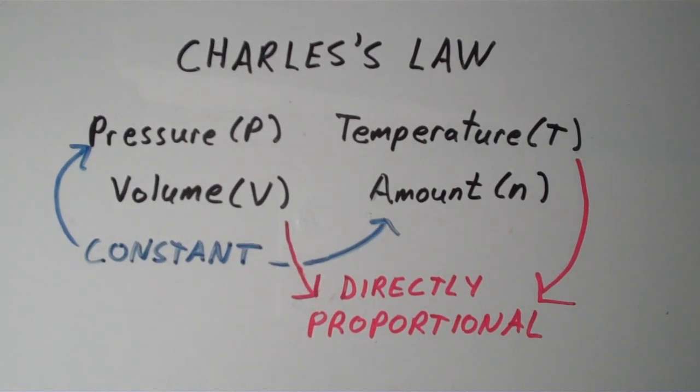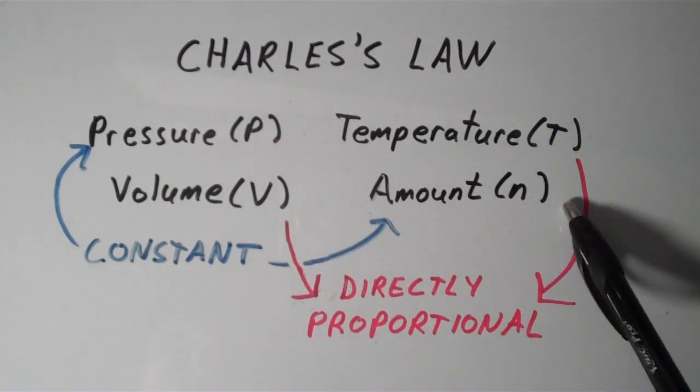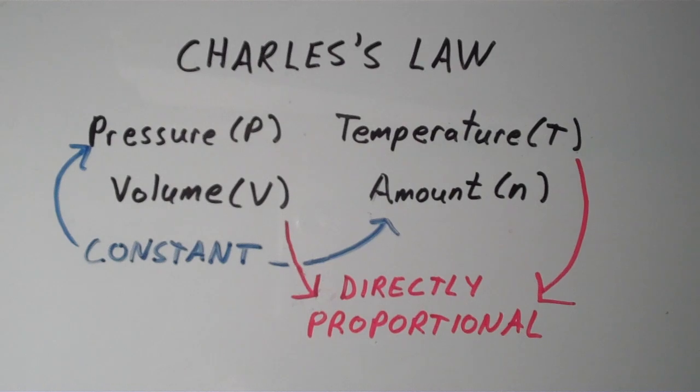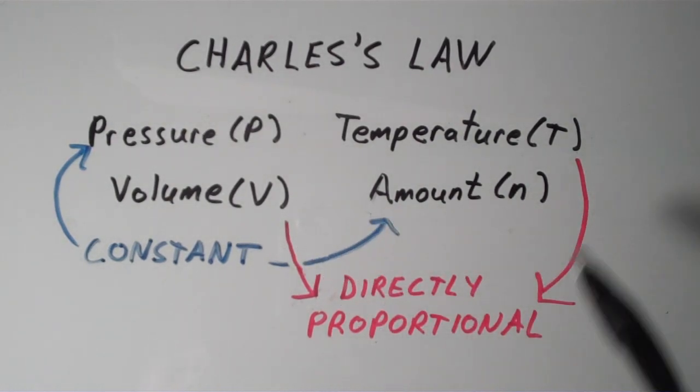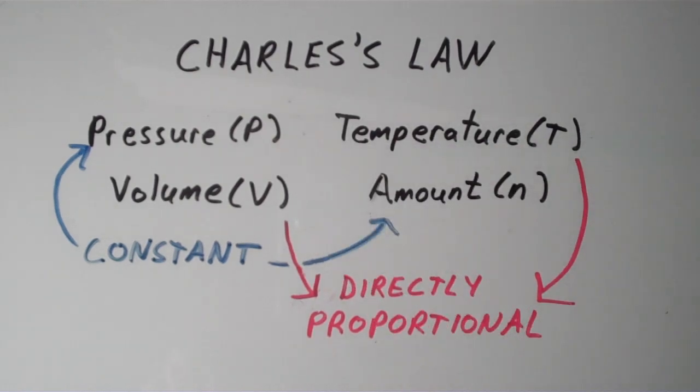So what Charles's Law says is that if you keep the pressure of the gas and the amount of the gas constant, then the volume of the gas is directly proportional to the temperature of the gas, and vice versa. So that means that if I were to increase the temperature of a gas, that increase in temperature would lead to an increase in volume. That is, if you keep the pressure and the amount constant.